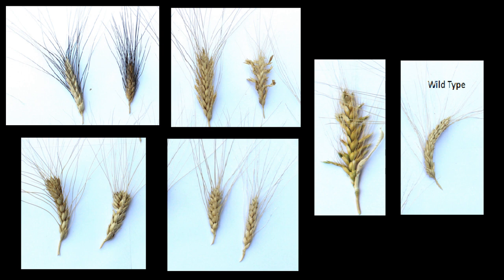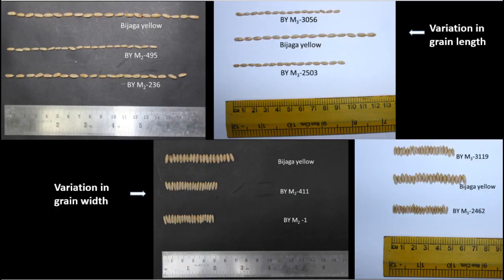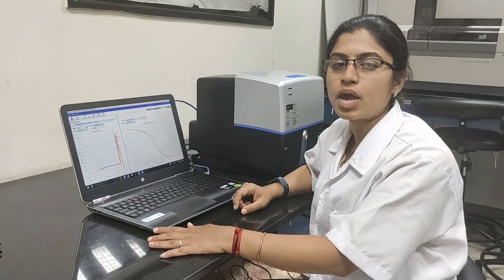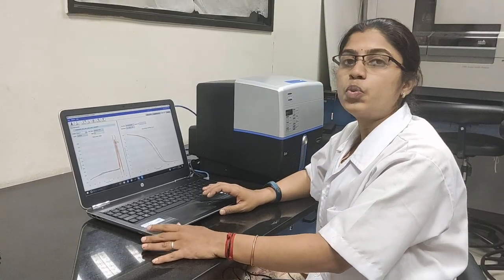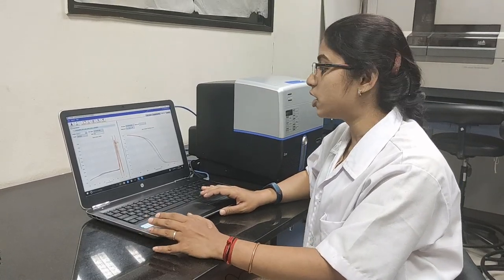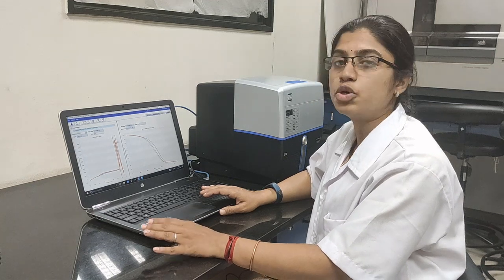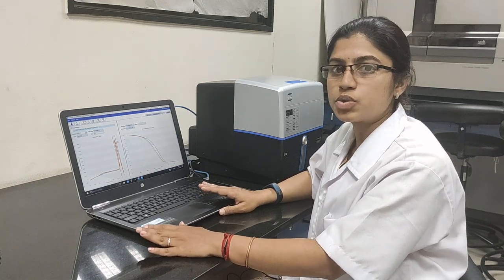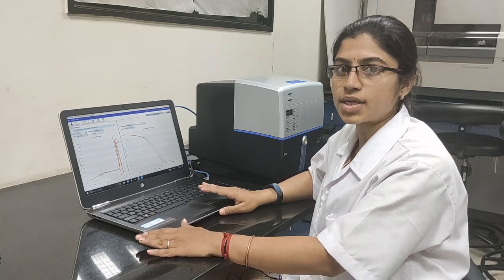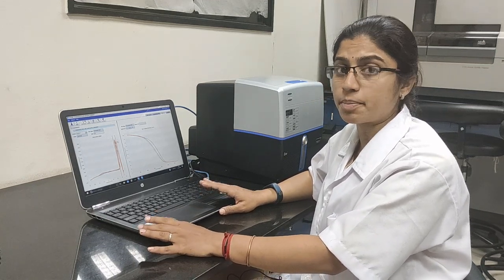Other variations that we can see are variation in grain length and grain width. At the genetic level, we can detect the mutants by knowing the shift in the nucleotide. This we have done using real-time PCR with the PCR melt machine.